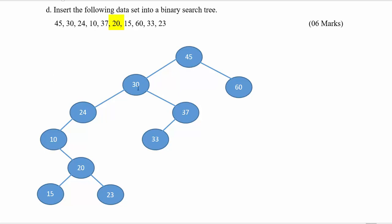The next number is 20 — 20 is less than 45 (left), less than 30 (left), less than 24 (left), and greater than 10, so it should go to the right-hand side of 10.